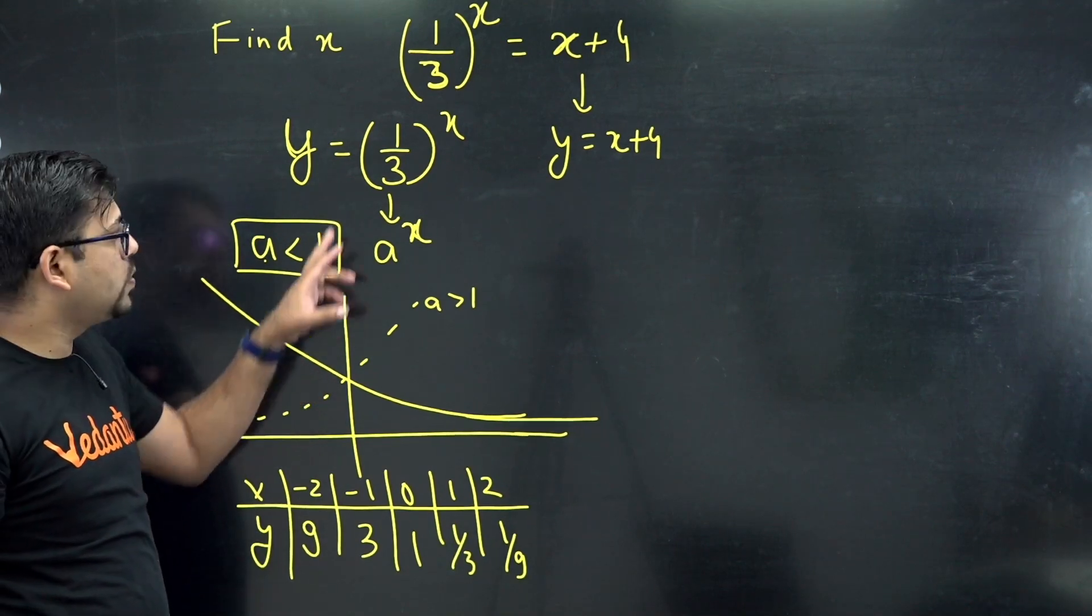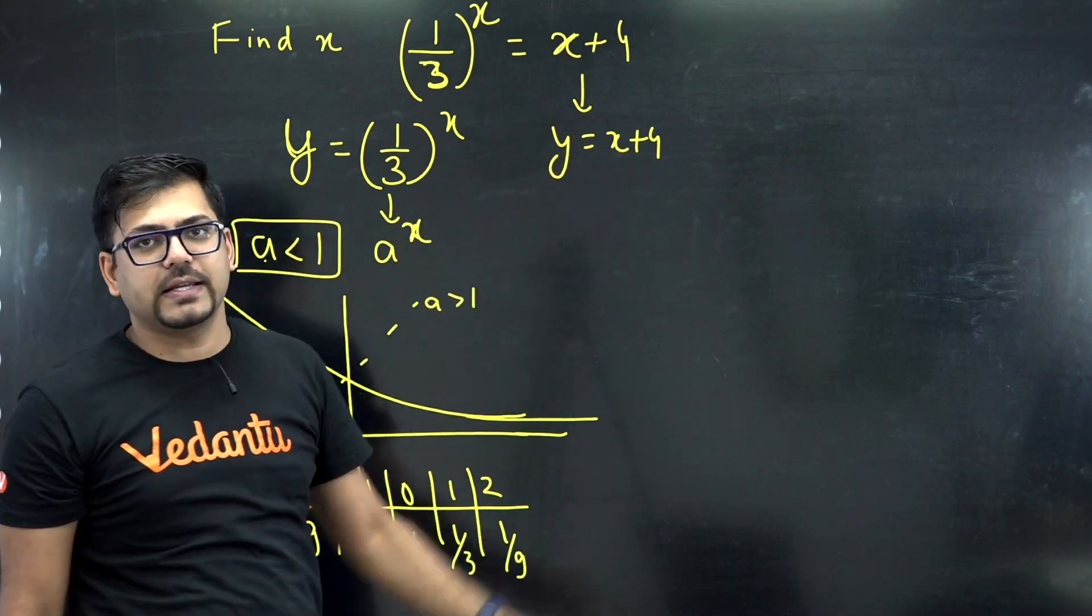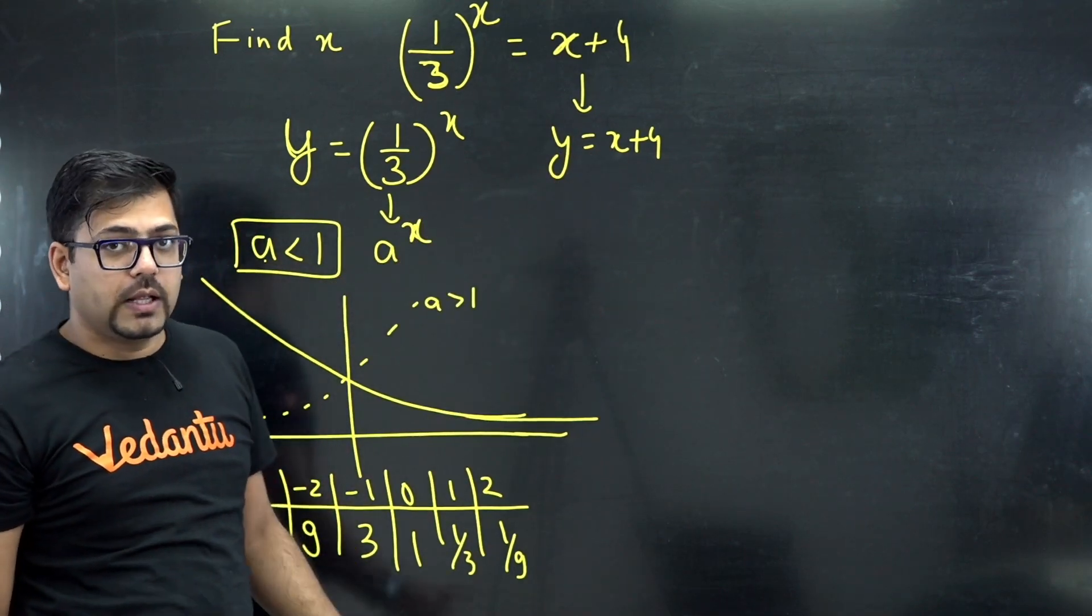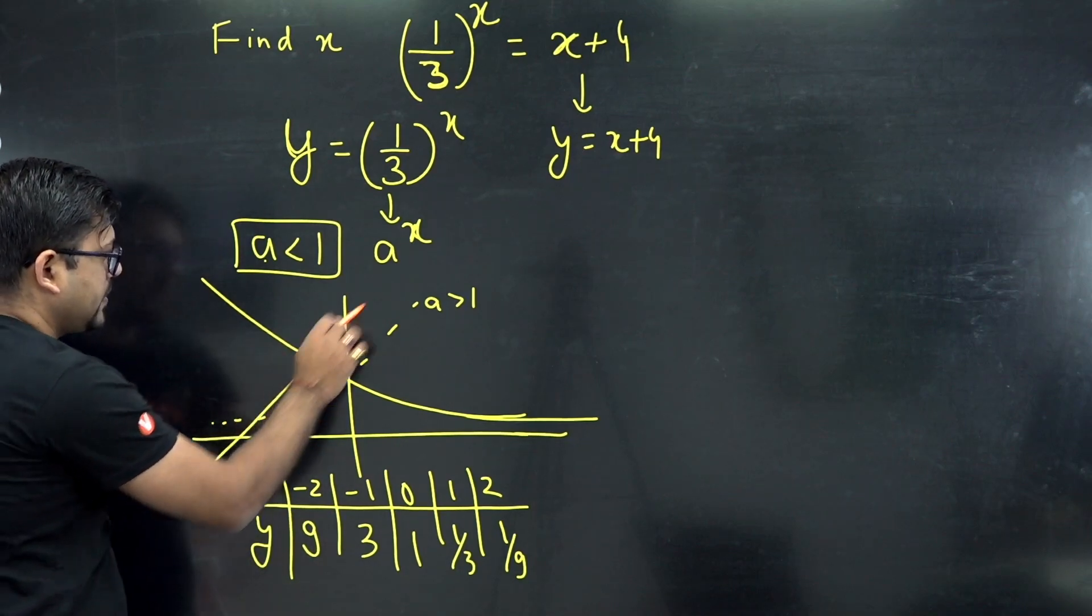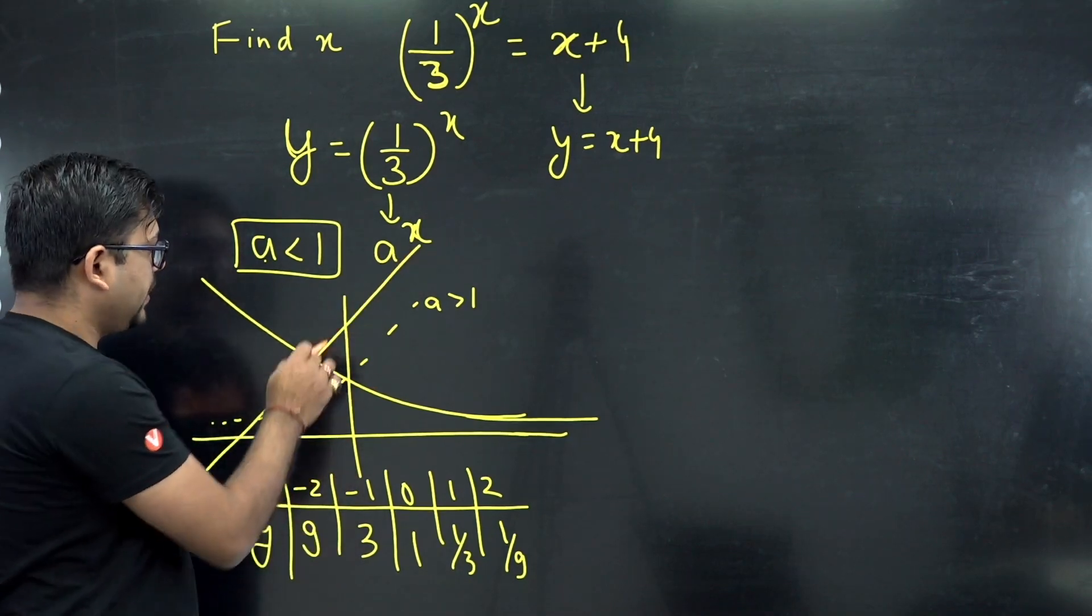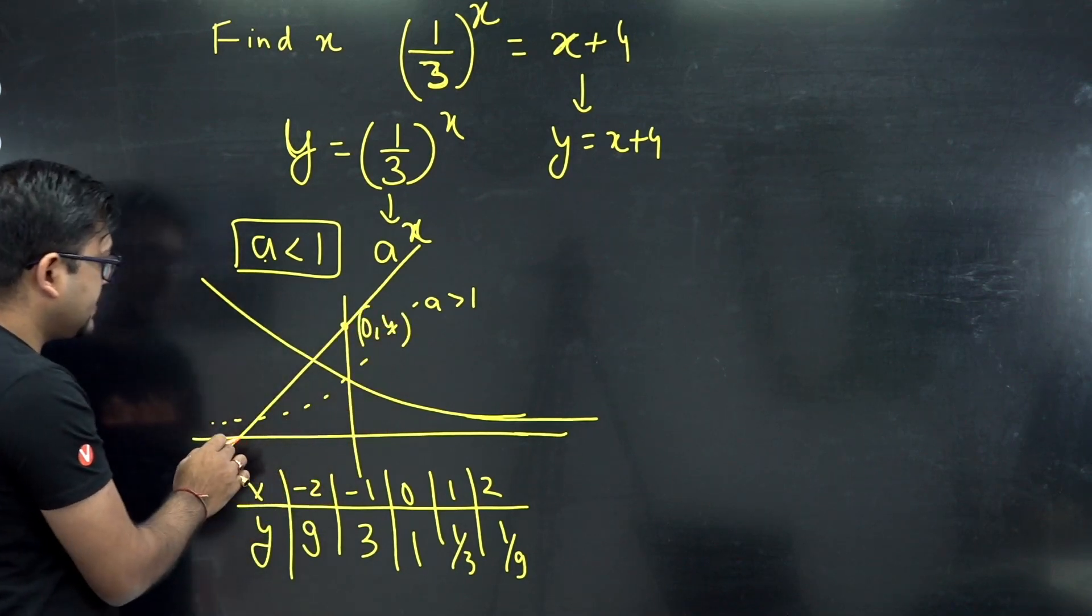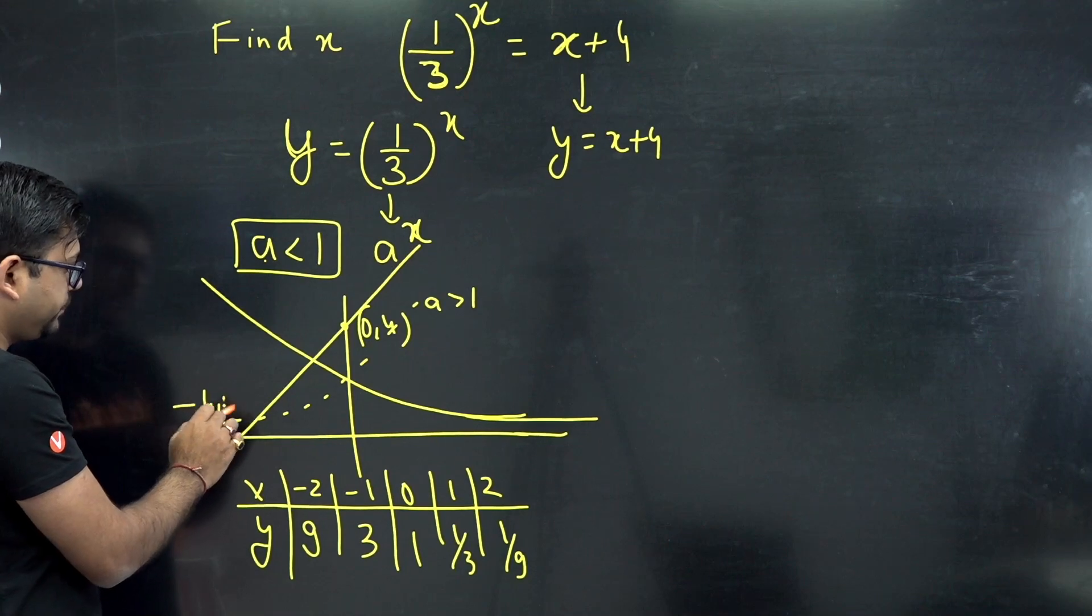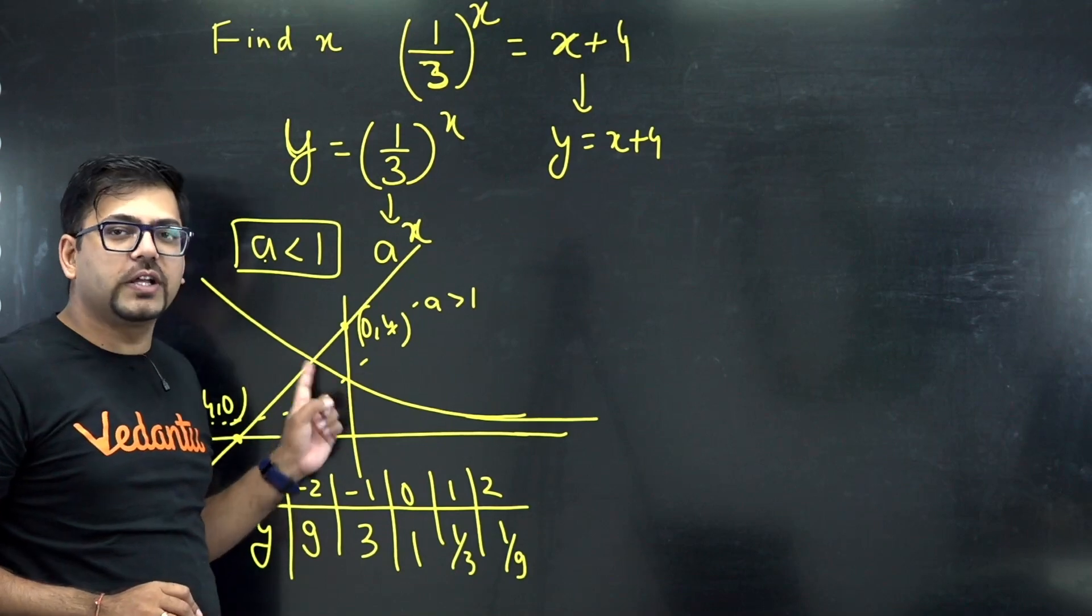So this is a graph for y equals to 1 by 3 raised to power x. And then you have one more graph, that is y equals to x plus 4. Now that y equals to x plus 4 is going to be a simple line like this. This line is going to intersect y axis at 0 comma 4 and x axis at minus 4 comma 0.